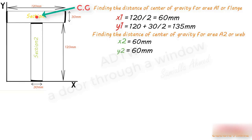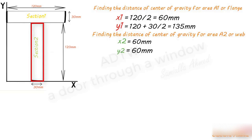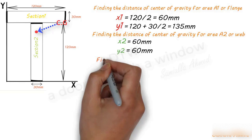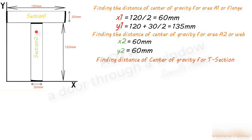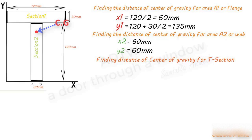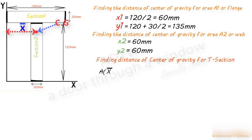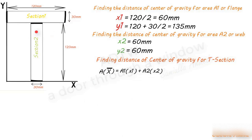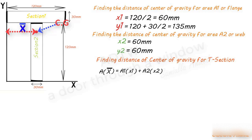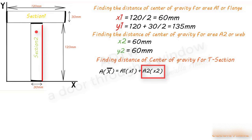Since we found the center of gravity of Section 1 and Section 2, and we know the areas, we can now find the center of gravity of the T-section, which lies approximately here. The relationship used states: the product of the area of the T-section and its CG distance from the Y-axis equals the sum of the products of the area of Section 1 and its CG distance plus the area of Section 2 and its CG distance from the Y-axis.